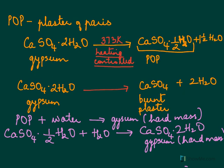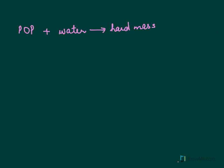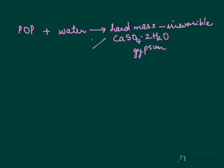The hard gypsum sets into the designs we want. So POP is obtained from gypsum, and when POP is mixed with water, it gives back gypsum. Remember, this reaction is irreversible — from the hard mass of CaSO4·2H2O (gypsum), it is not possible to get POP back again.